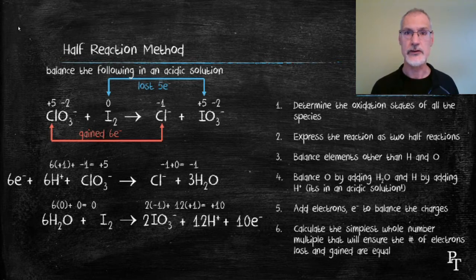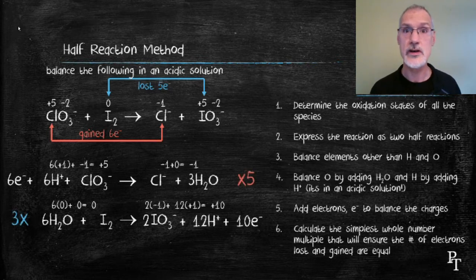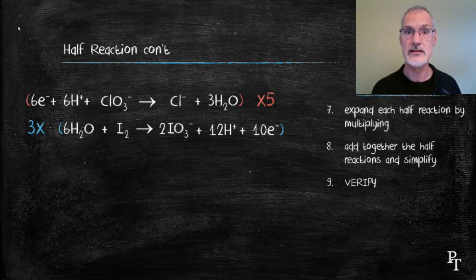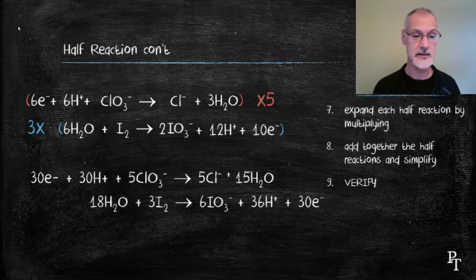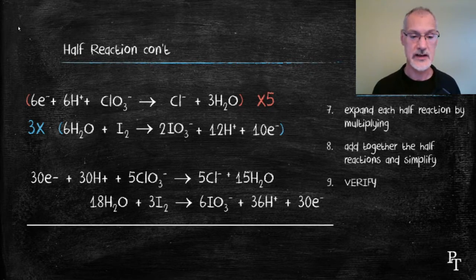I'm now approaching step six, where I want to balance the number of electrons lost and gained. In this case, the easiest common multiple is 30 electrons. So I'm going to multiply the first equation by five and the second equation by three — that will ensure that the number of electrons lost and gained are equal. Let's expand each of those equations by multiplying by the identified factors. Now we're at the step where we can add these two equations together.